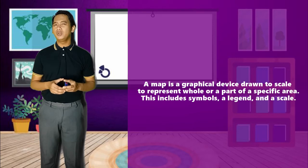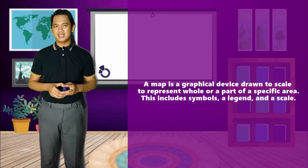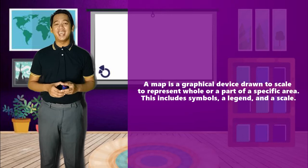Are you now ready for the last one? All right, the last one is a map. A map is a graphical device drawn to scale to represent the whole or a part of a specific area. This includes symbols, a legend, and a scale. I know that you are all familiar with what a map is, aside from your pre-existing ideas on tables and graphs. There you have it! Those are the different text features of our lesson today.